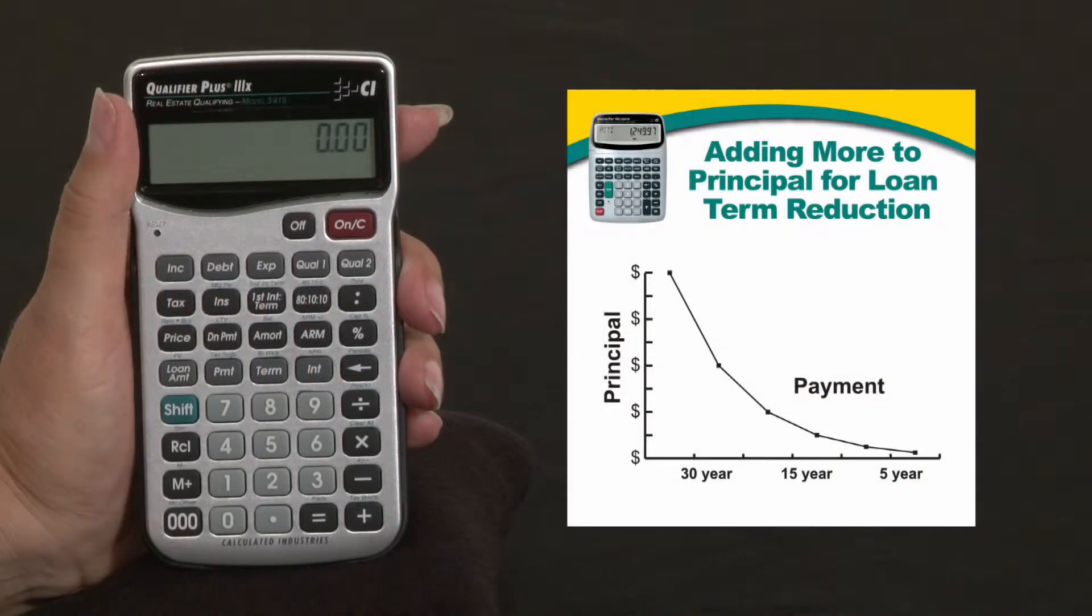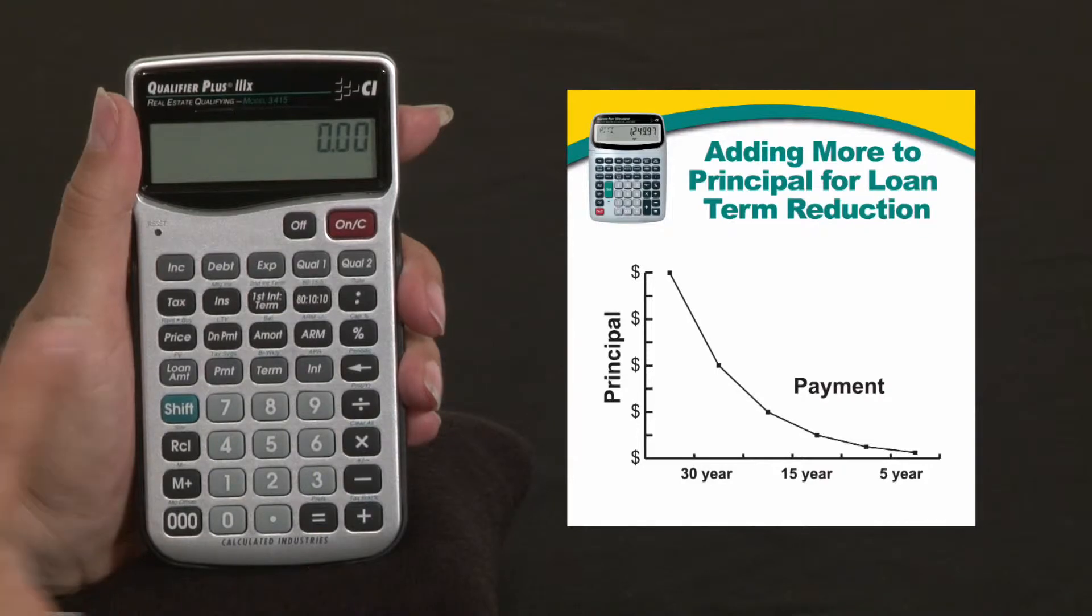The Qualifier Plus 3x desktop and FX also have the ability to add more to your principal payment to reduce your loan term.